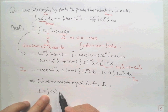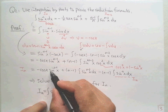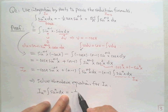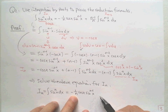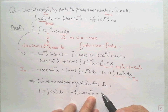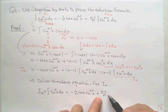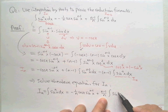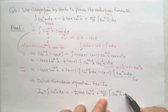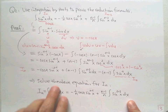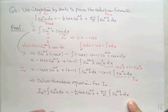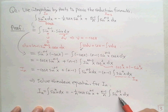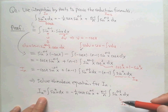We can compare this to the original question. I_n equals this expression, which includes I_{n-2}. This means we are reducing from I_n to I_{n-2} — the power goes down by 2. This is the second reduction formula we have proven.